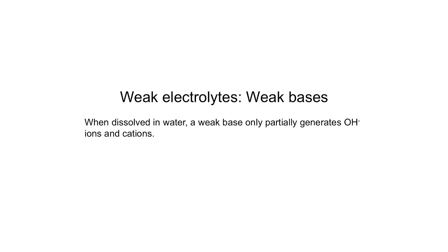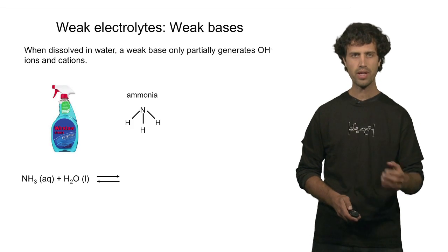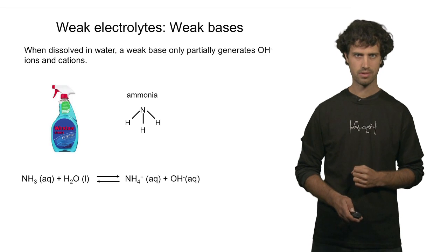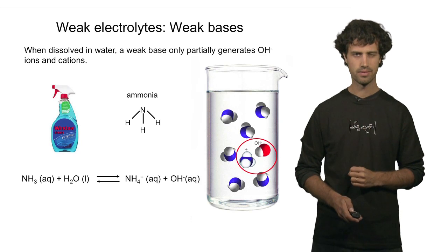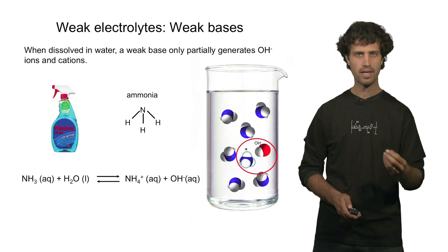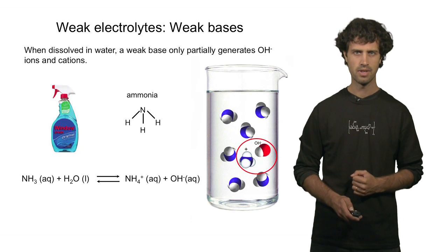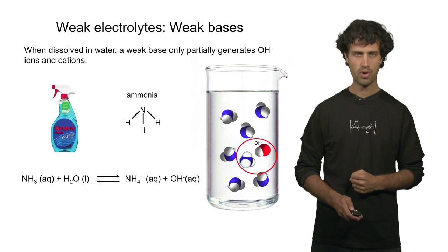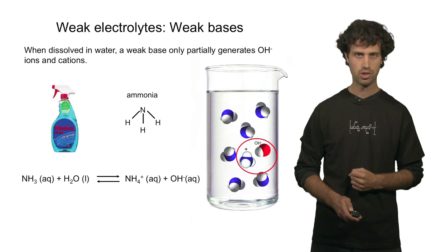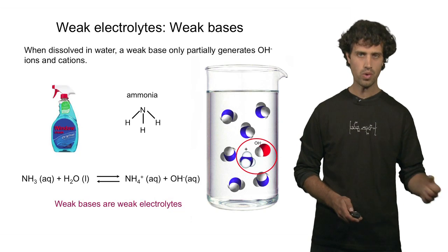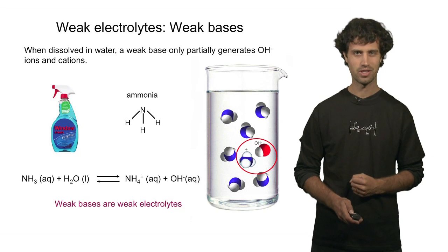Weak bases are also weak electrolytes. When a weak base is dissolved in water, it only partially produces ions, among which the hydroxide anion. An example is ammonia — when dissolved in water, it produces ammonium ions by attracting a proton from the water molecule, and thus also creates a hydroxide anion. Because it generates hydroxide anions, ammonia is a base. However, this reaction is reversible, meaning that at any given time only a few ammonia molecules may be protonated. That means we may not have a lot of charged compounds in solution at any given time. Therefore, weak bases are considered weak electrolytes because there are not a lot of ions in solution at any given time.